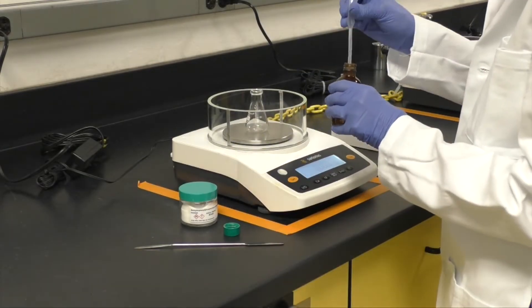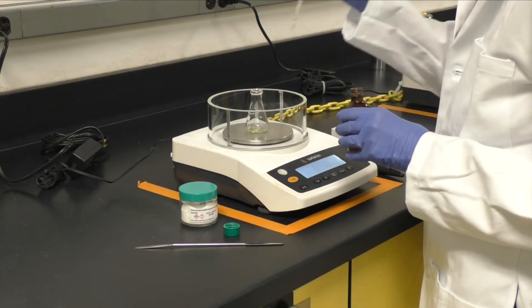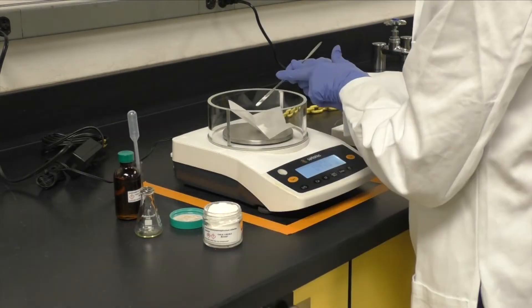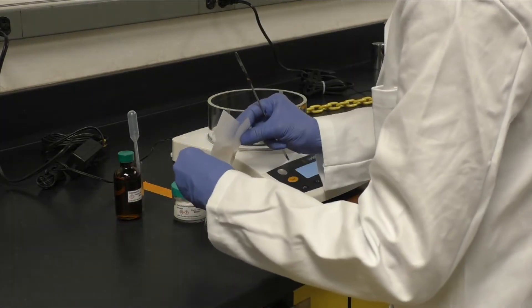Weigh out 500 milligrams of your assigned aldehyde into a 25 milliliter Erlenmeyer flask. Then weigh out and add 500 milligrams of benzyl triphenyl phosphonium chloride.